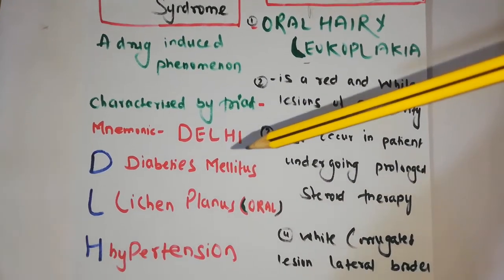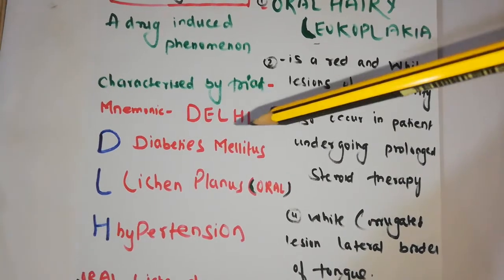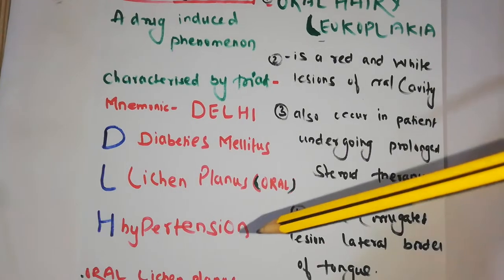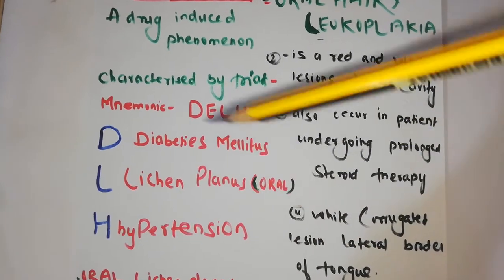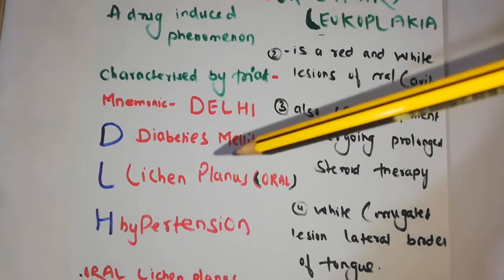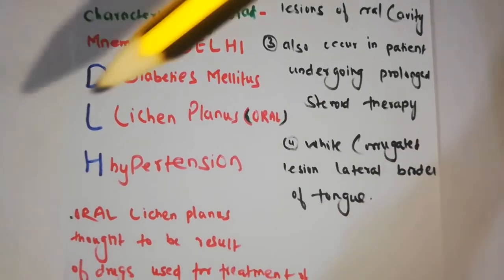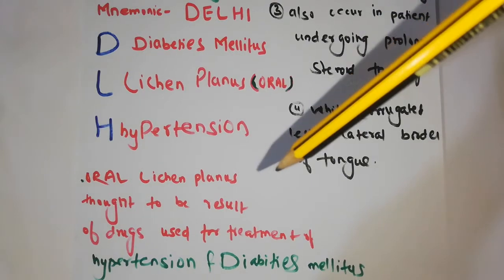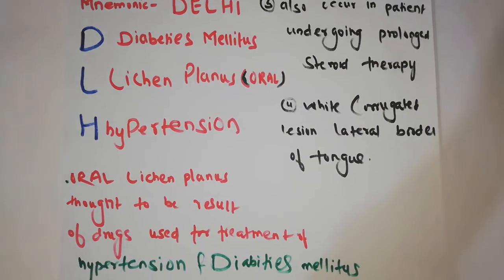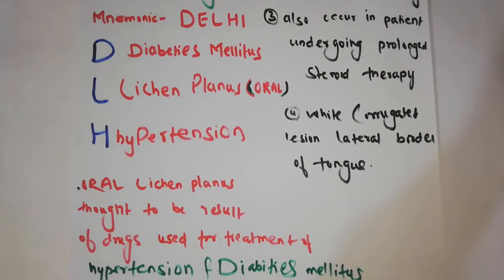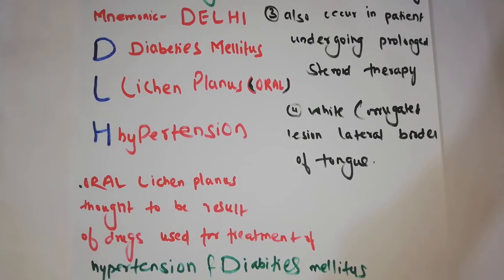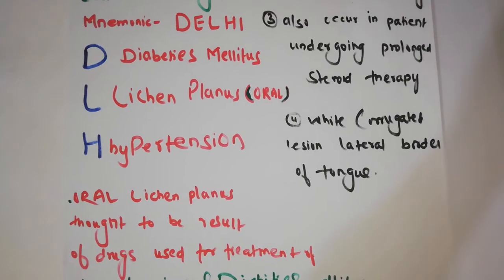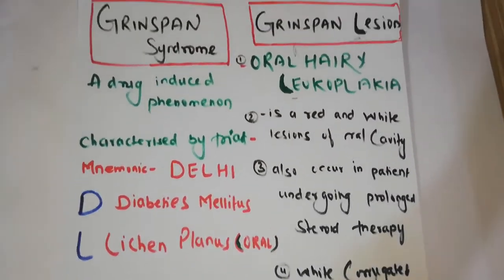The mnemonic is DALI: D for Diabetes Mellitus, L for Lichen Planus (that is oral lichen planus), and H for Hypertension. Oral lichen planus is thought to be a result of drugs used for the treatment of hypertension and diabetes mellitus. This is not confirmed, but research is ongoing.